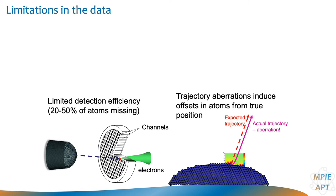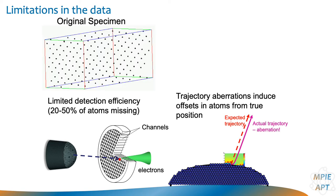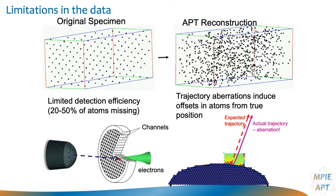We also have a limited detection efficiency — not all atoms are detected. This comes from the micro-channel plates at the entry face of the position-sensitive detector, which transform a single ion striking the detector into a cascade of about a million electrons collected by the anode, giving us positional information. So if we start with a nicely crystalline specimen, what we end up with in the reconstruction is a more amorphous-looking structure. But there is always the possibility to gain some crystallographic information from within this point cloud.